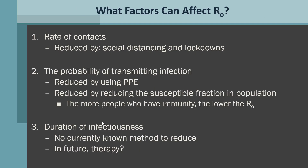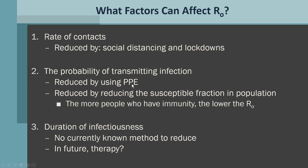What factors can affect R0? The first is the rate of contacts. The rate of contacting other people is reduced by social distancing and lockdowns. If you have people in the population not working, then they're not mixing — there's social distancing and the rate goes down, so the R0 goes down. The second factor is the probability of transmitting infection. This is reduced by using personal protective equipment or PPE. PPE can include items such as face masks, gloves, and hand sanitizer. But the probability of transmitting infection can also be reduced by other actions, such as sanitizing the indoor environment at home, at school, or in the workplace. When you do these things, you are part of reducing R0 for everyone.